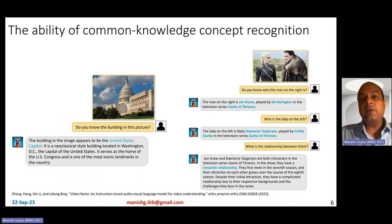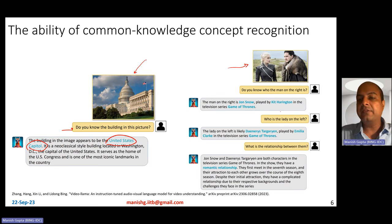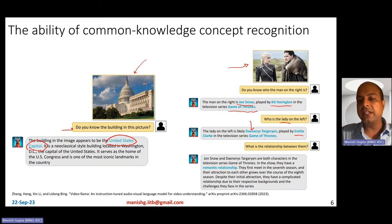It also has the ability of common knowledge and concept recognition. Given a building, asked 'do you know the building in this picture?' it's nicely able to say it's the US Capitol building. Given another image, asked 'do you know who is the man on the right?' it correctly predicts both the real name and the character name in the movie or television series, and is also able to predict the name of the television series. Asked 'who is the lady on the left?' it again does the same job correctly, and when asked about the relationship, it explains it pretty nicely.